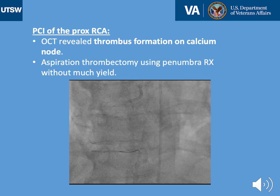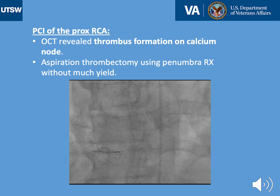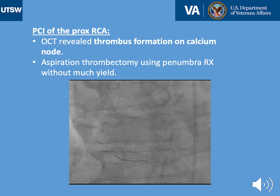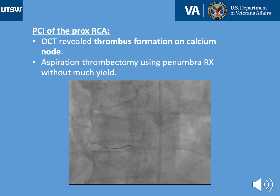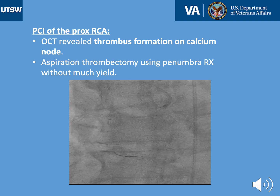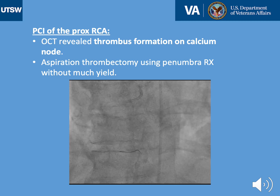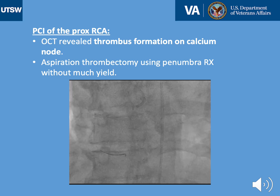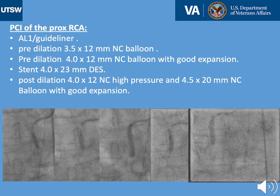As you can see on the image, the wire started coming back and the guide started coming back as well. Despite multiple attempts, we lost wire position and guide and had to change to AL1. Based on the data from intravascular imaging, we decided to proceed with PCI using the AL1 guide and guide extension for additional support.